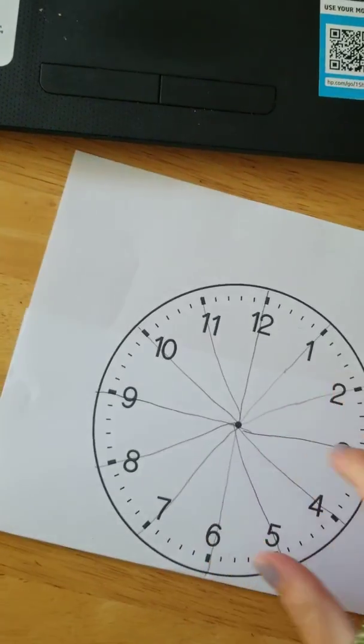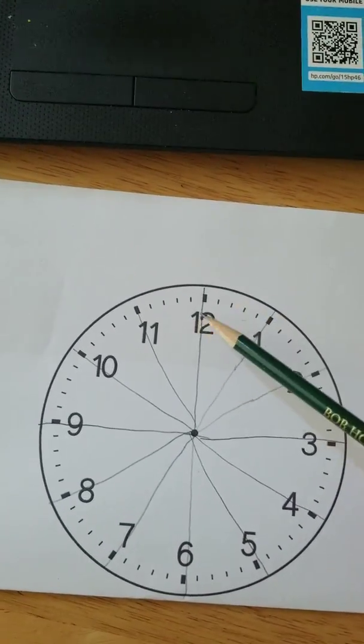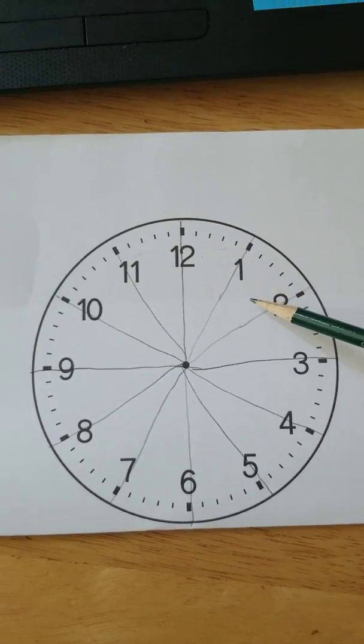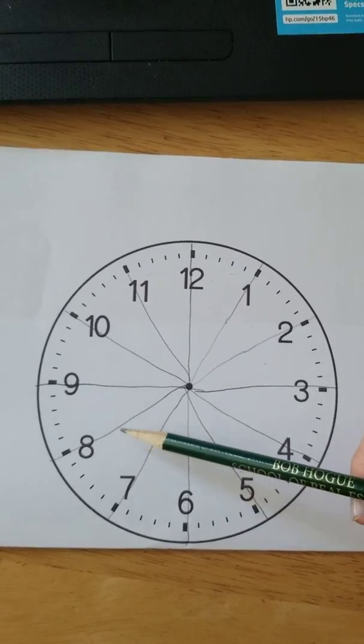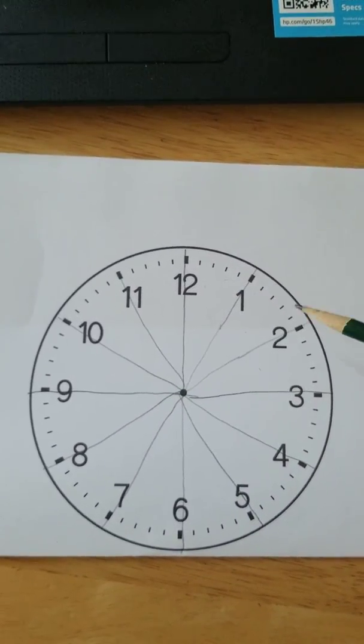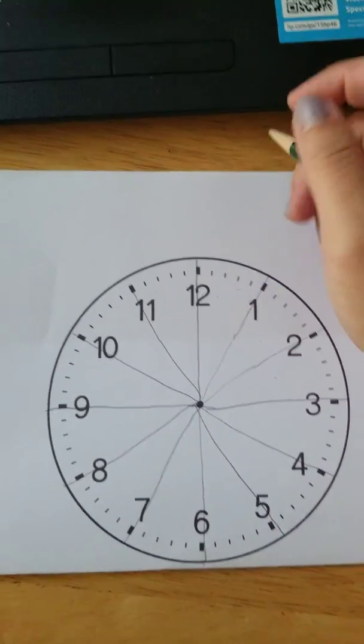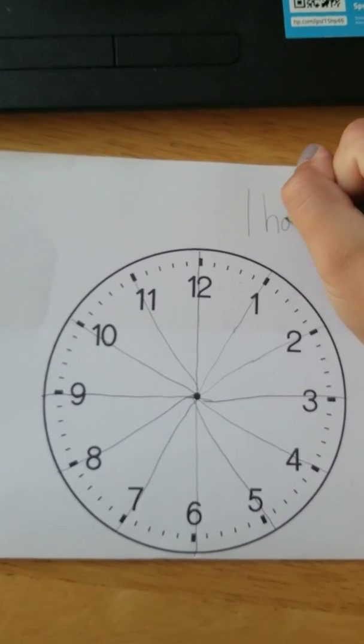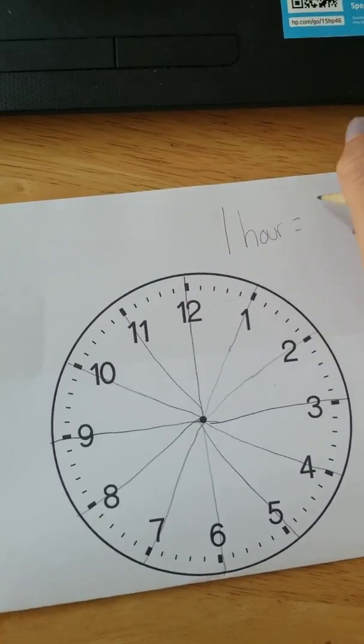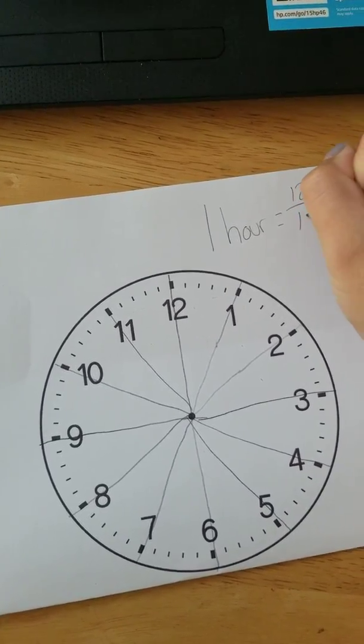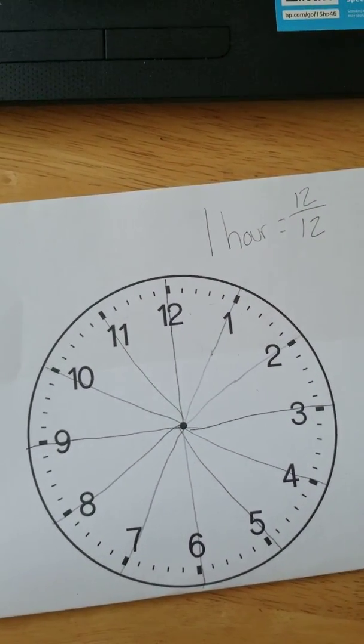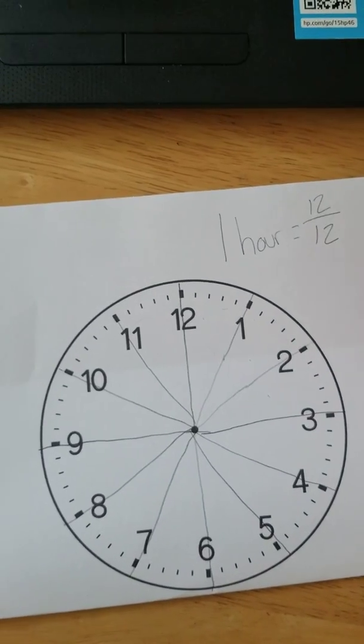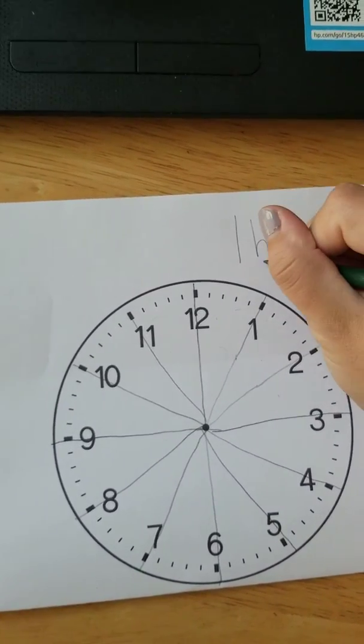There we go. So I have 12 pieces on this clock, just like how I have 12 numbers: 1, 2, 3, 4, 5, 6, 7, 8, 9, 10, 11, 12. So if I have one hour, that would be equal to 12 twelfths. That's how I'm going to use a clock as a fraction. 12 twelfths is an hour, or 60 minutes.